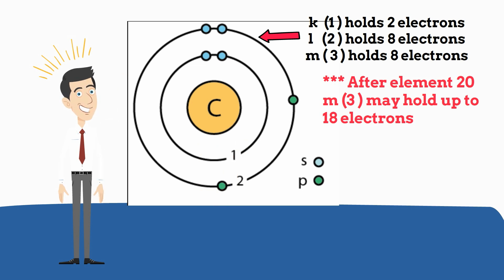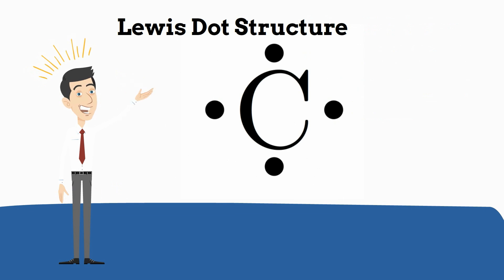There's another way you can demonstrate called the Lewis dot structure. You basically just take the electrons in the outer shell, which are your valence electrons, and then write them around the symbol. And that's what this looks like.